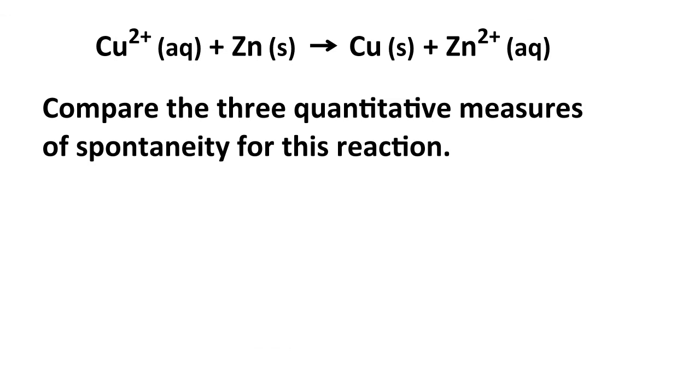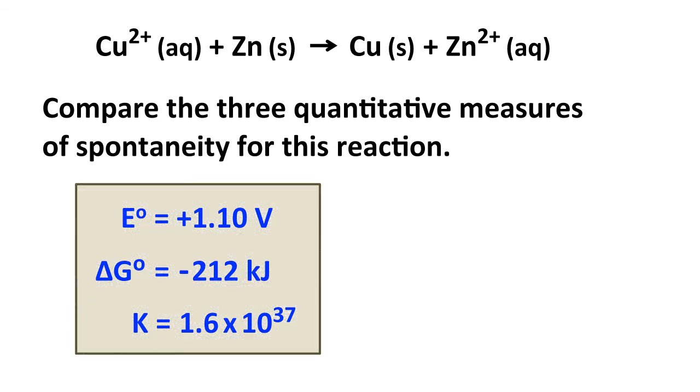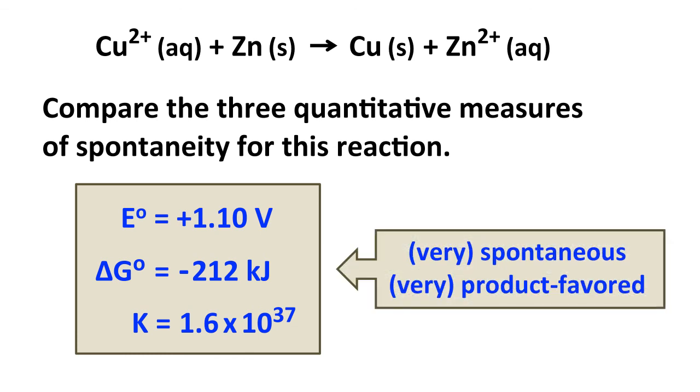So let's just summarize by comparing these three quantitative measures of spontaneity of reaction. E naught is 1.1 volts. It's a positive number. Delta G naught is negative 212 kilojoules. It's a negative number. And K is 1.6 times 10 to the 37th. It's a very big number. And all three of these things essentially mean the same thing. They mean we have a very spontaneous, very product favored reaction. And you notice in different scales here, E is a smallish number compared to delta G, which is negative, but much, much bigger. And then K, of course, is an even bigger number yet because we're using different quantitative measures. Even though they mean the same thing, the numbers look fairly different, at least superficially.